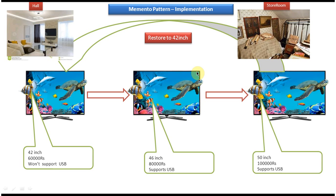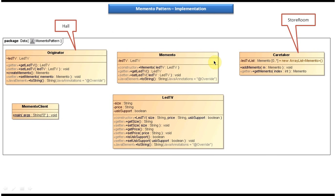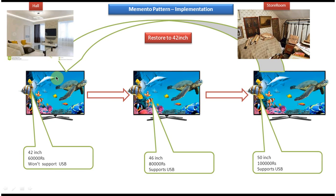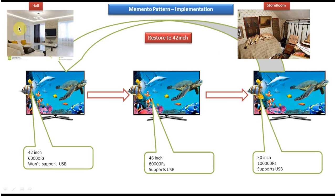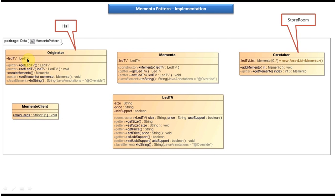Now we will see the class diagram of this scenario. This is the class diagram of the scenario which we have just seen. Here you can see the LED TV class which represents the LED TV. It has three attributes: size, price, and USB support, and getter and setter methods for those. If you want to create a LED TV object you have to call the constructor by passing size, price, and USB support. On the left side you can see the originator, which is nothing but the hall. This hall has a LED TV object and getter and setter methods for LED TV, and the originator has a createMemento method.